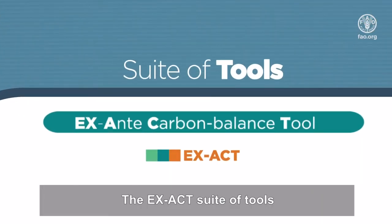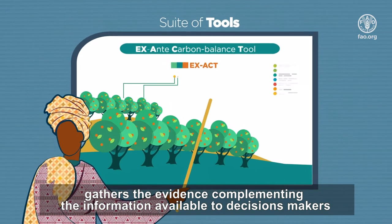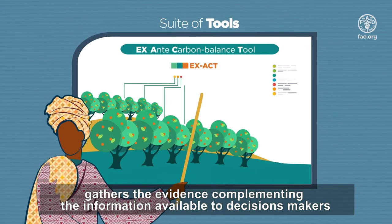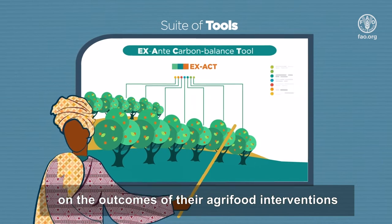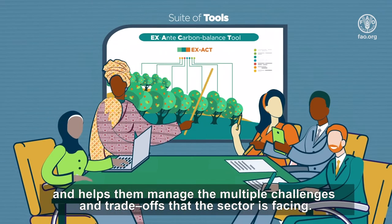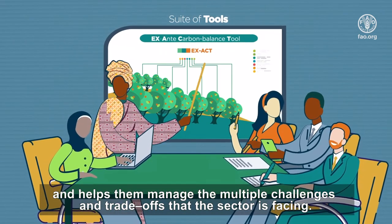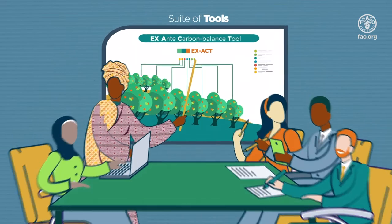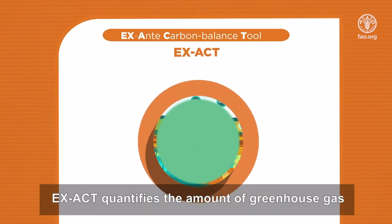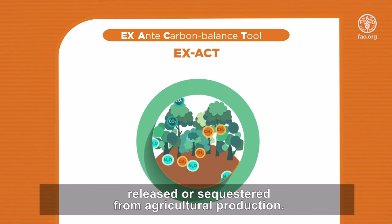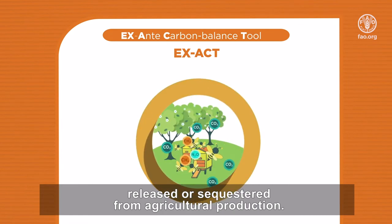The EXACT suite of tools gathers the evidence complementing the information available to decision makers on the outcomes of their agri-food interventions, and helps them manage the multiple challenges and trade-offs that the sector is facing. EXACT quantifies the amount of greenhouse gas released or sequestered from agricultural production.